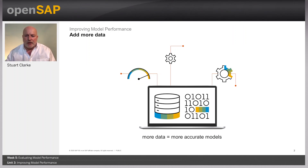Welcome back. In this unit we're going to take a look at how we can improve model performance. If we can use more data, this can obviously help us build more accurate models; however, the data must be clean and domain specific. Sometimes there won't be an option to add more data — for example, in a data science competition — but while working on a company project you should ask for more data if it's available.